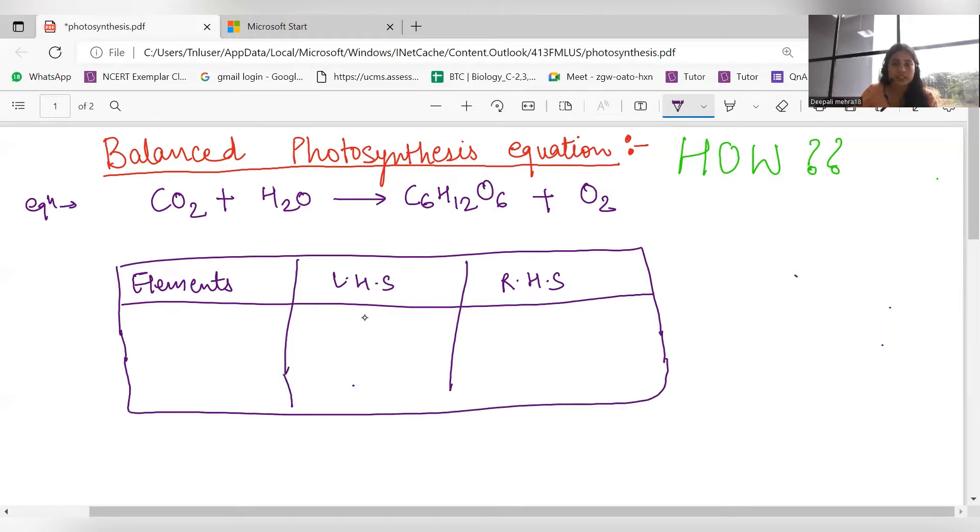Okay, so first of all we will write elements. Elements: C means carbon, O is oxygen, and H is hydrogen. Let's see. Carbon, oxygen, hydrogen. So how to balance?